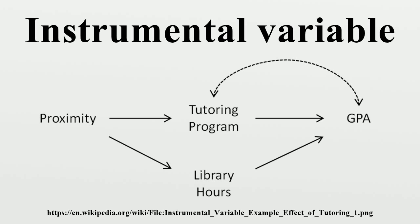Given a random sample of T observations from this process, the ordinary least squares estimator is β̂_OLS, where x, y, and u denote column vectors of length T. When x and u are uncorrelated, under certain regularity conditions the second term has an expected value conditional on x of 0 and converges to 0 in the limit, so the estimator is unbiased and consistent. When x and the other unmeasured causal variables collapsed into the error term are correlated, however, the OLS estimator is generally biased and inconsistent for β.